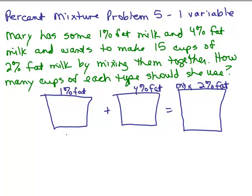Now underneath each one, I'm going to write the percentage as a decimal. So 1% would be 0.01, 4% is 0.04 and 2% is 0.02. Remember, we always want to write our percents as decimals. You could write them as fractions but that makes it more complicated.